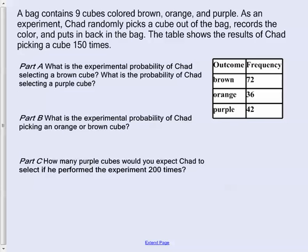A bag contains 9 cubes colored brown, orange, and purple. As an experiment, Chad randomly picks out a cube of the bag, records the color, and puts it back in the bag. The table shows the results of him doing this 150 times. So he is literally doing an experiment. That's why we're finding experimental probability. What is the experimental probability of Chad selecting a brown cube? So the probability of a brown, we write it down like this. We know that he did this 150 times, so that is our possible outcomes at the bottom, and the ones that we actually had were 72.